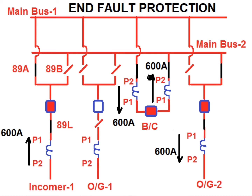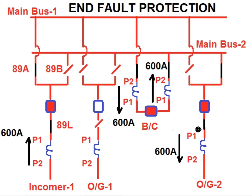For zone 2, this CT and this CT will be considered. For this CT the direction of current is from P2 to P1, so it is a forward direction. For outgoing feeder 2 the direction of current is from P1 to P2, so it will be reverse direction. So again the differential current for zone 2 is zero. The bus bar relay will be maintained in stable condition.